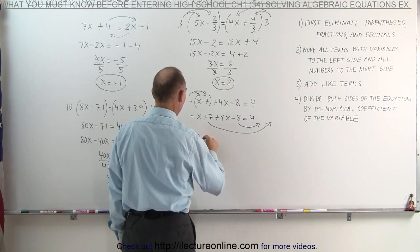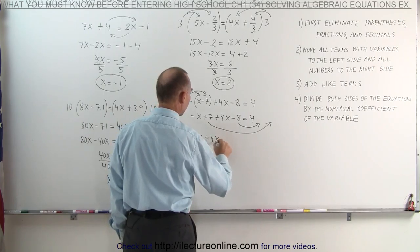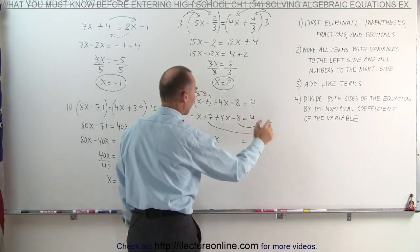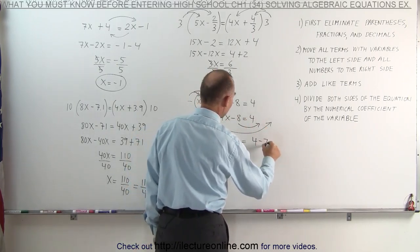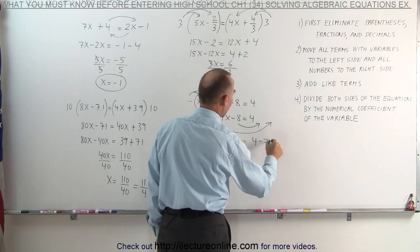On the left side, we end up with a negative x plus 4x is equal to... And on the right side, the 4 is already there. The plus 7 becomes a negative 7. And the negative 8 becomes a plus 8.